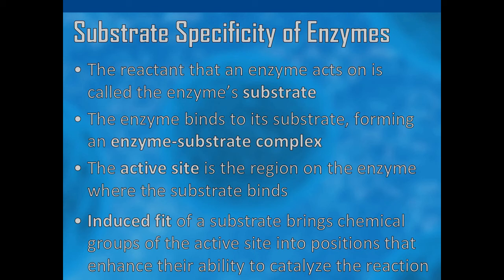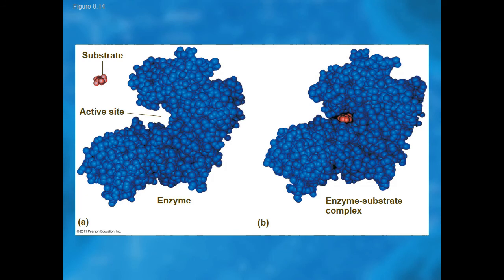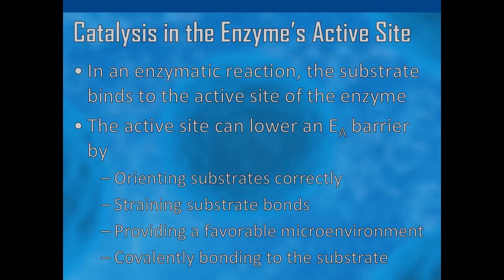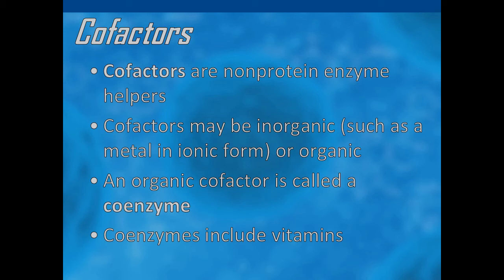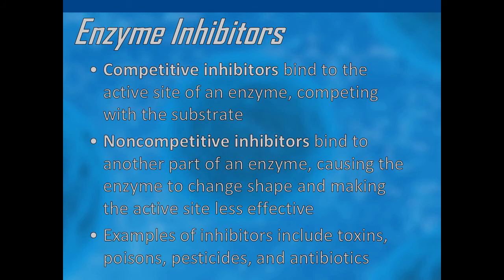The induced fit model states that a substrate binds to an active site, and both change shape slightly, creating an ideal fit for catalysis. When an enzyme binds its substrate, it forms an enzyme-substrate complex. Enzymes promote chemical reactions by bringing substrates together in an optimal orientation, creating an ideal chemical environment for the reaction to occur, and the enzyme always returns to its original state upon completion. Although some enzymes consist only of protein, many are complex proteins that include a protein component and a cofactor, which may aid in catalytic function. Enzyme inhibitors are molecules that interact with enzymes — temporarily or permanently — and reduce the rate of an enzyme-catalyzed reaction. The important types are competitive, non-competitive, and uncompetitive inhibitors.